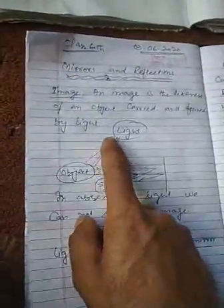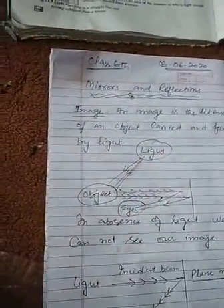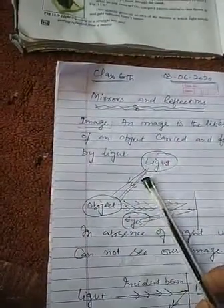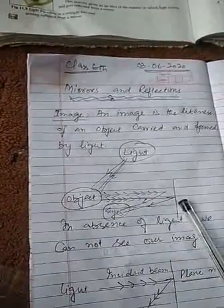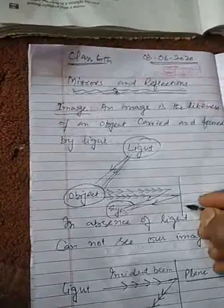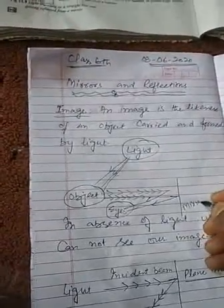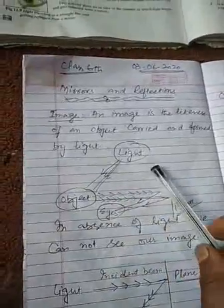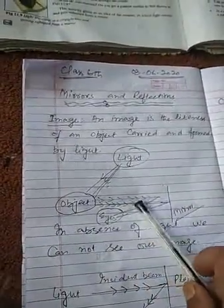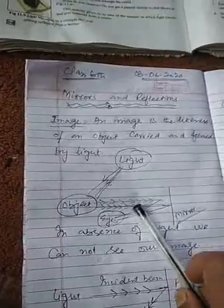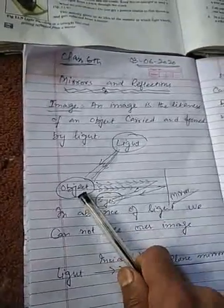We need a mirror, a source of light, and an object. The mirror produces an image. The image is of the object, but the object and image are related through the mirror.